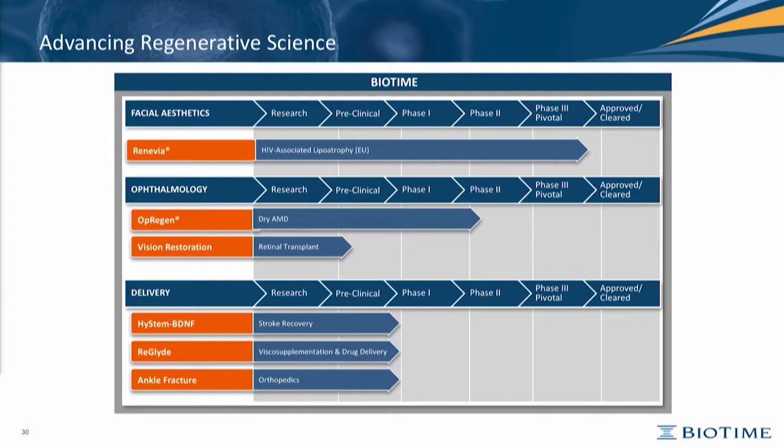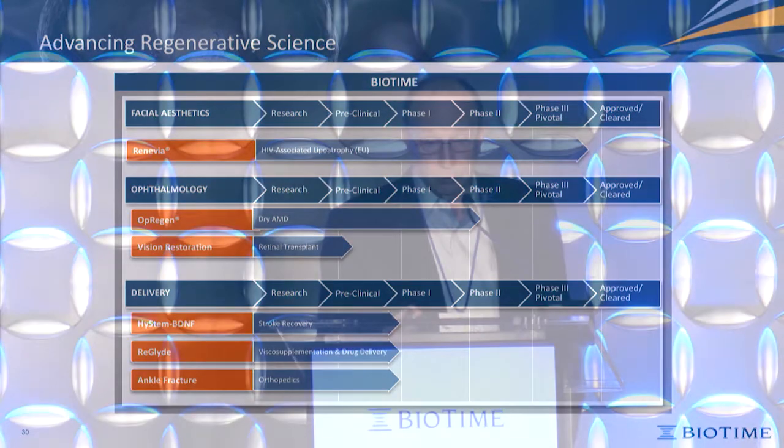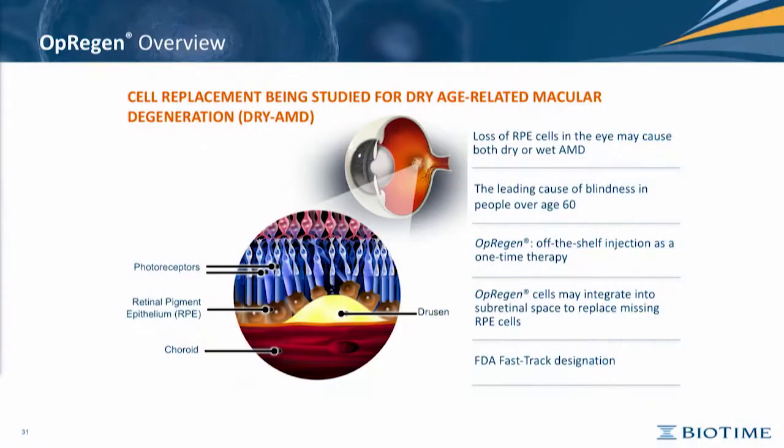For other cell delivery applications, we are also in the arena of stroke, and in rheumatology for joint disease, arthritis, and the restoration of cartilage. Going back to the ophthalmology arena, OpRegen is the clinical trial that we have started in Israel, and now we are starting to open sites in the U.S.